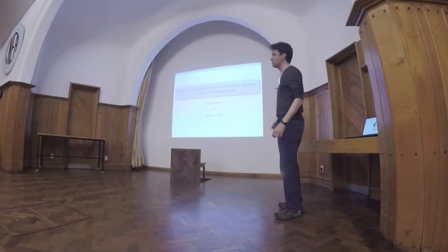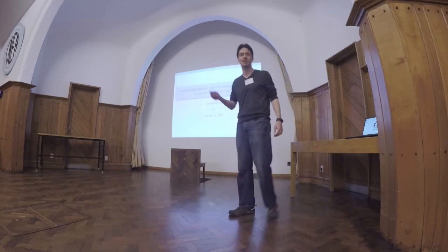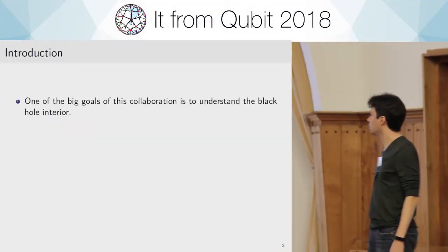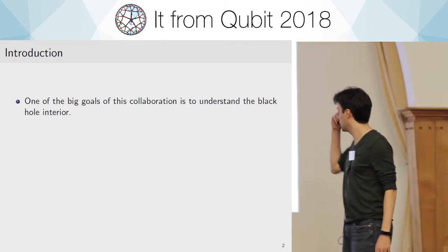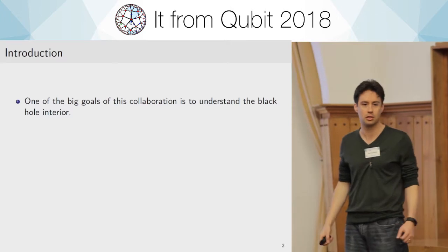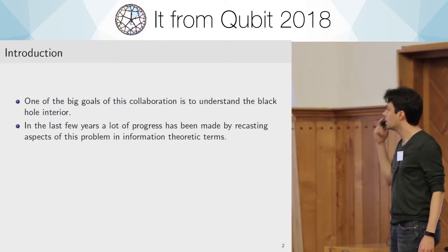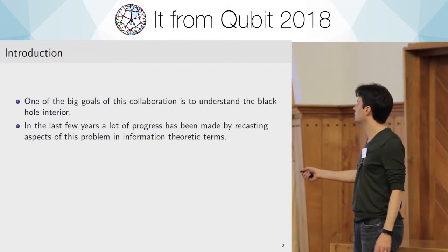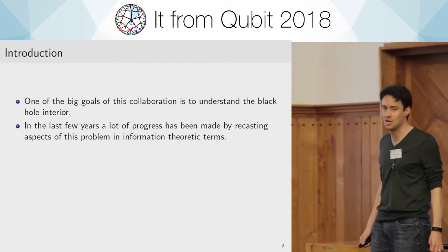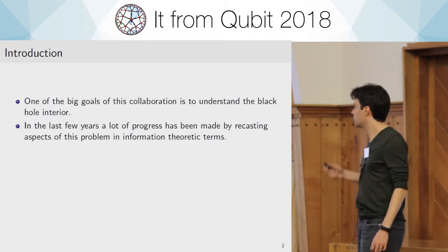I'm going to talk about this topic — there'll be a fair bit of overlap with things already said, but maybe hearing it a second time helps. Let me start with a broader perspective. One of the big goals of the IT from qubit collaboration is thinking about the black hole interior — how do we understand the emergence of the black hole interior? Recently a lot of progress has been made using tools from quantum information theory, working on the qubit side.